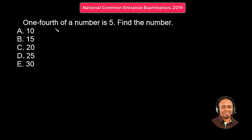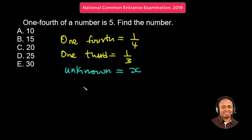First, what is one-fourth? One-fourth is one over four. Just as we have one-third, which is one over three. So we're working with one-fourth. So if we are told that one-fourth of a number, that number is unknown. So we represent that with the letter x. So one-fourth of that number, that is x over four, is equal to five as given in the question.